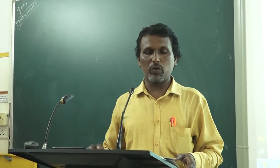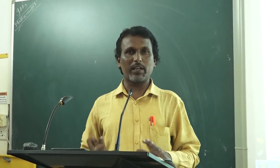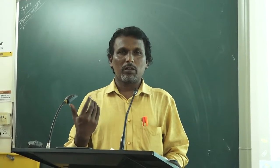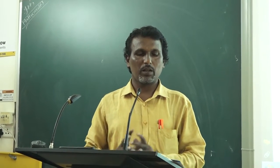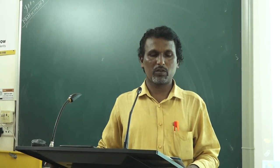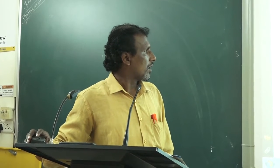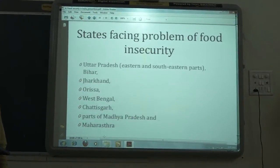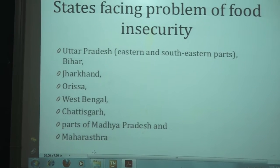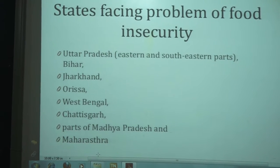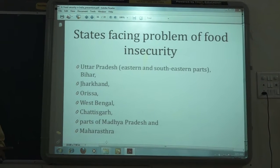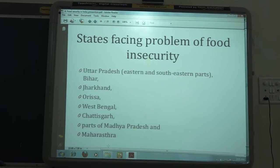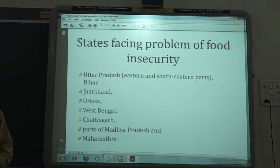Now we will discuss which states have more food insecurity. In our country, not all states are equally developed. States like Uttar Pradesh, Bihar, Jharkhand, Odisha, West Bengal, Chhattisgarh, and parts of Madhya Pradesh and Maharashtra have a serious food security problem. In these states, production is less and population is more. Due to backward technology and large population, there is scarcity and shortage of food.